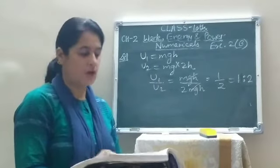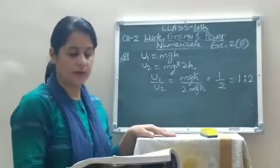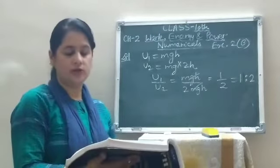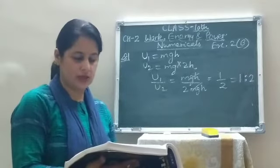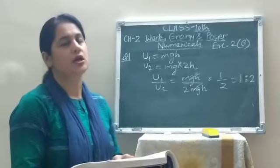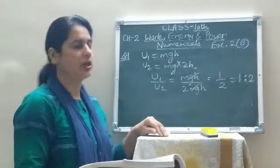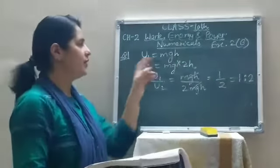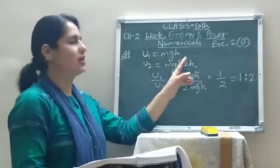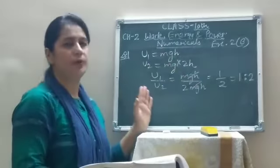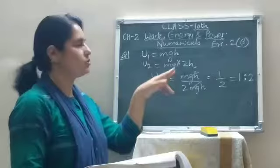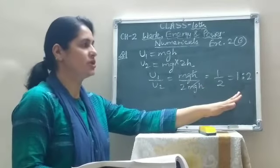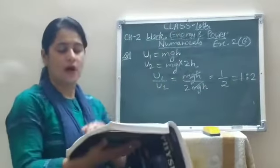The presentation of the chapter is over. Now we will do numericals from exercise page 41. The first question: two bodies of equal masses are placed at heights H and 2H. Find the ratio of their gravitational potential energies. Using U = mgH: U1 = mgH and U2 = mg·2H = 2mgH. So U1 upon U2 = mgH / 2mgH = 1/2. The ratio of potential energies at heights H and 2H is 1:2.